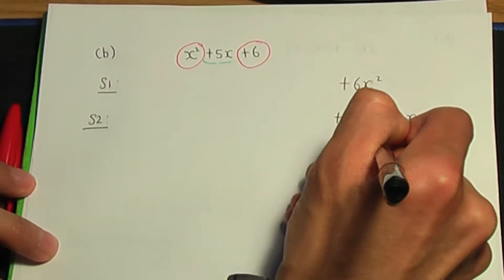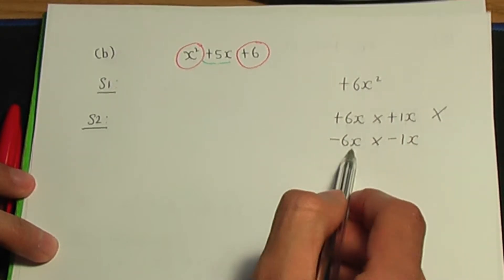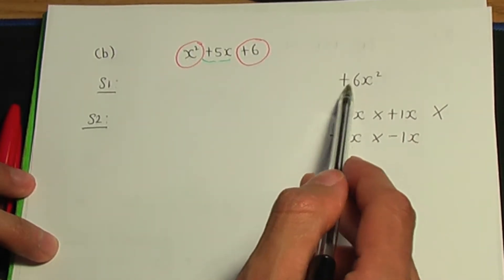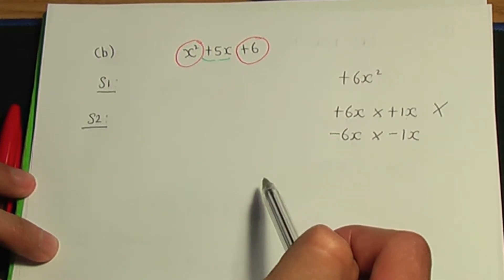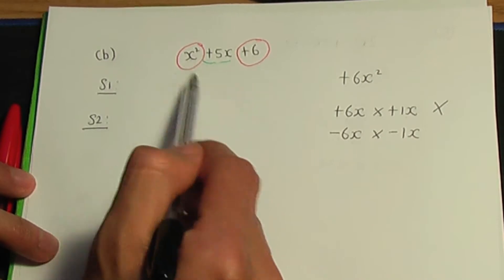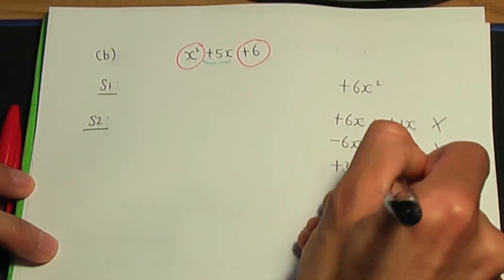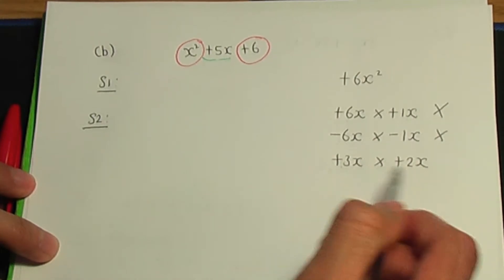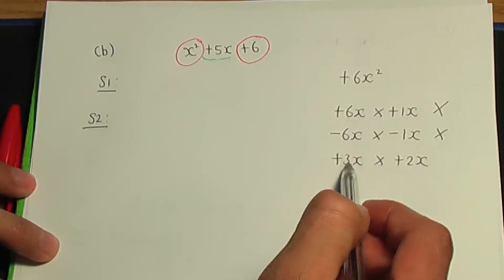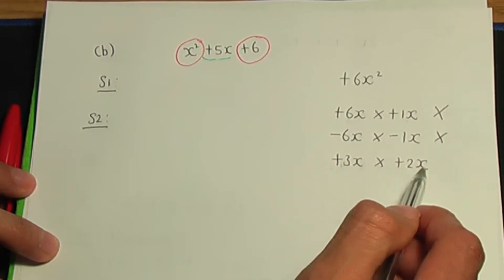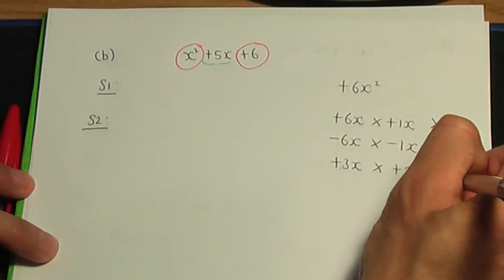Let's try minus 6x and minus 1x. Minus 6x times minus 1x gives plus 6x squared. However, when you add minus 6x and minus 1x, you don't get the x term in the quadratic, so these don't work either. How about plus 3x and plus 2x? Plus 3x times plus 2x gives plus 6x squared, and plus 3x plus 2x when added gives plus 5x. So these are the two terms.